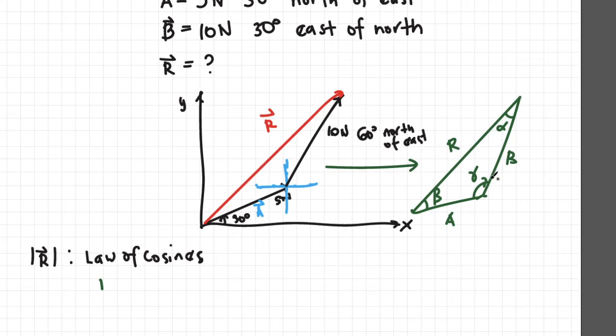Based on this triangle, the law of cosines tells us that the length R is equal to A squared plus B squared minus 2AB cosine gamma.